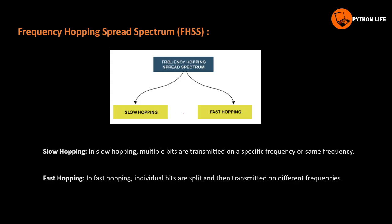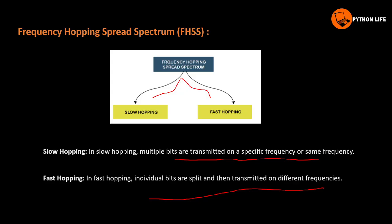In FHSS, there are two types of hopping: slow hopping and fast hopping. In slow hopping, multiple bits are transmitted on the same specific frequency at one time. In fast hopping, individual bits are split and then transmitted on different frequencies. In slow hopping, traffic uses the same frequency, making transmission slower.